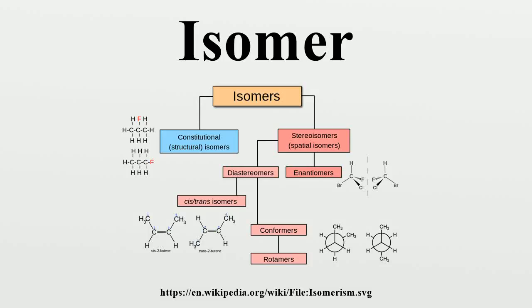An isomer is a molecule with the same chemical formula as another molecule, but with a different chemical structure. That is, isomers contain the same number of atoms of each element, but have different arrangements of their atoms.